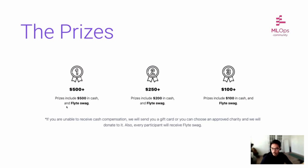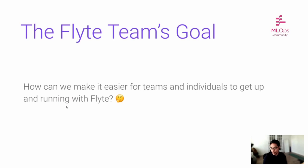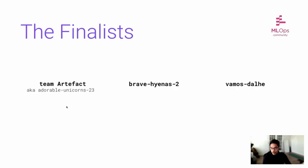Besides engineering glory, we're obviously giving away cash prizes and Flyte swag to the top three finalists. Our internal goal was: how do we make it easier for people to onboard and get started with Flyte? This engineering labs experience gave us an answer — we took note of all the various things that were perhaps blockers or confusing and we're taking that feedback and iterating on the user experience. The finalists are Team Artifact — aka Adorable Unicorn 23, the auto-generated name given at the beginning of the hackathon — Brave Hyenas 2, and Vamos Dali.